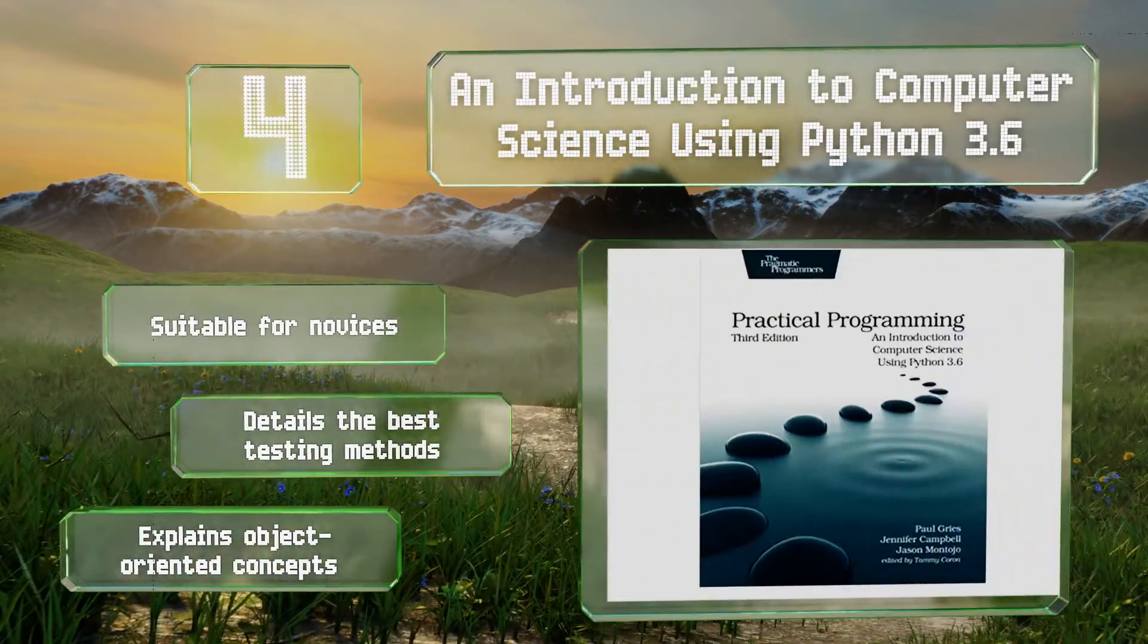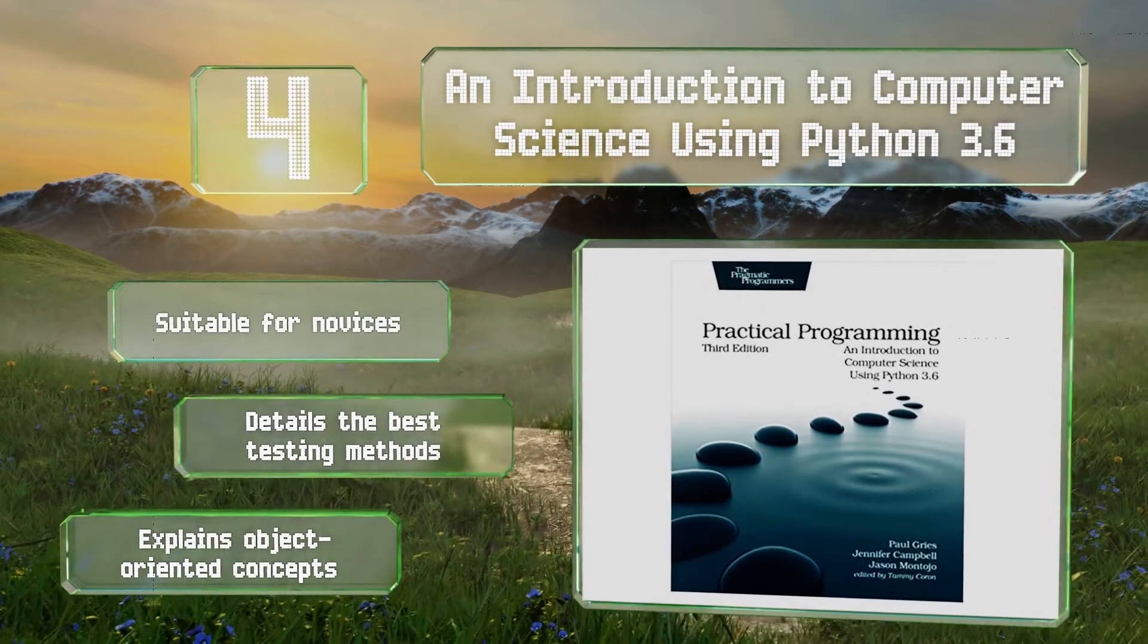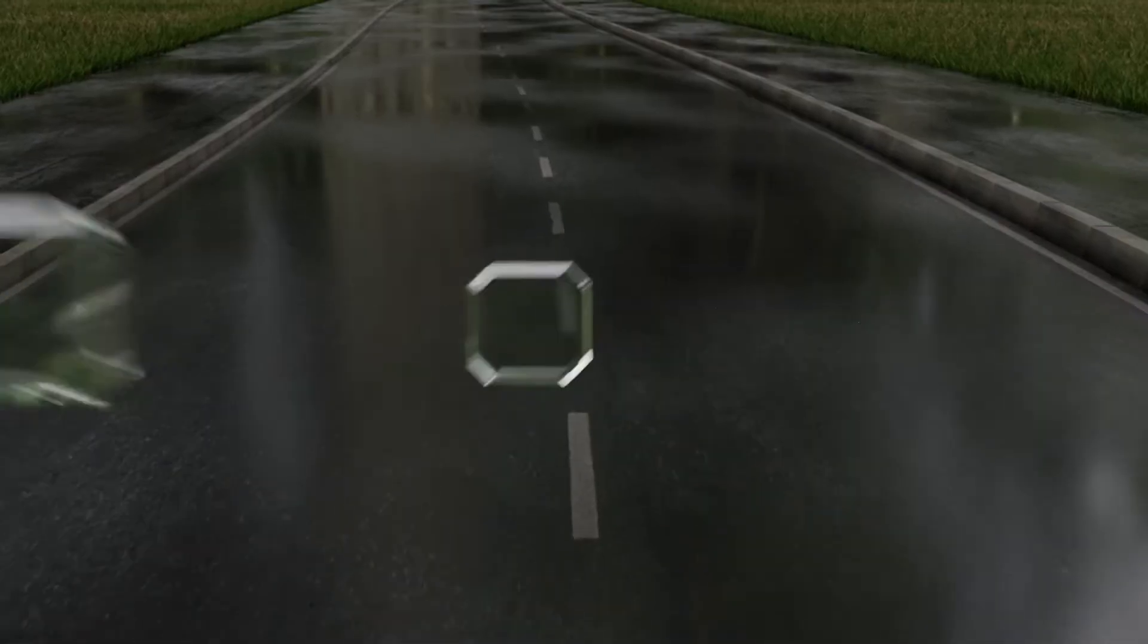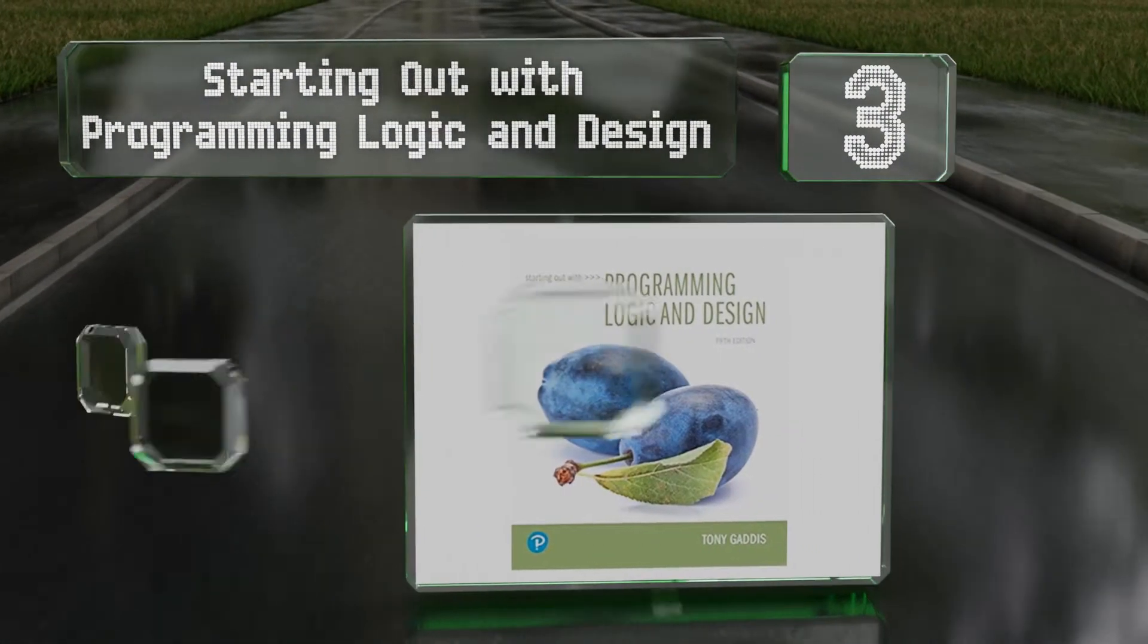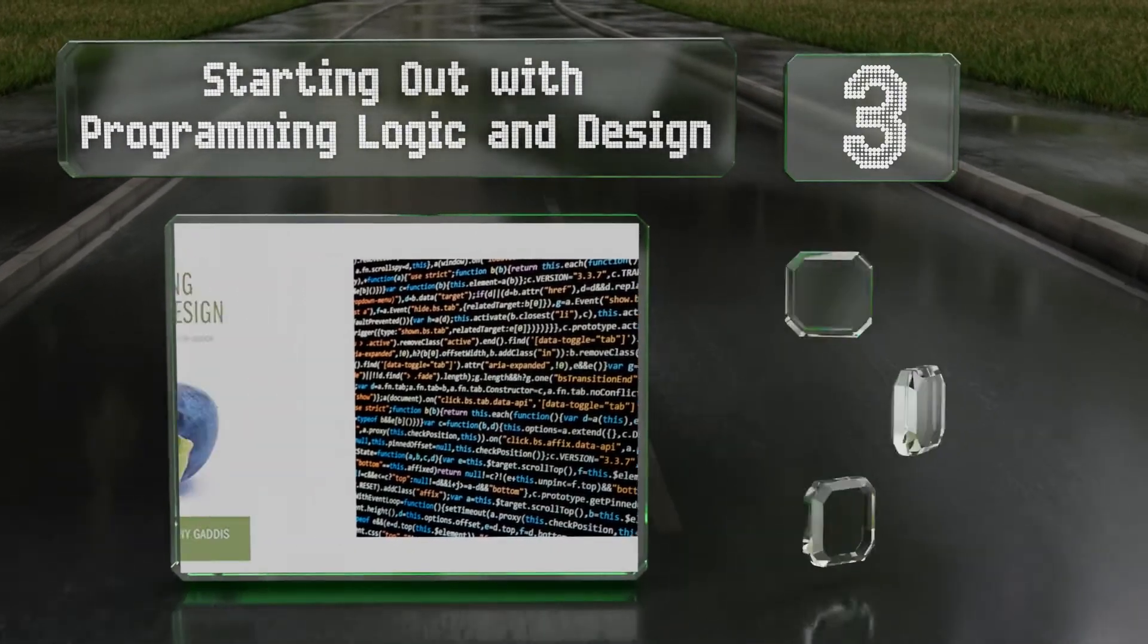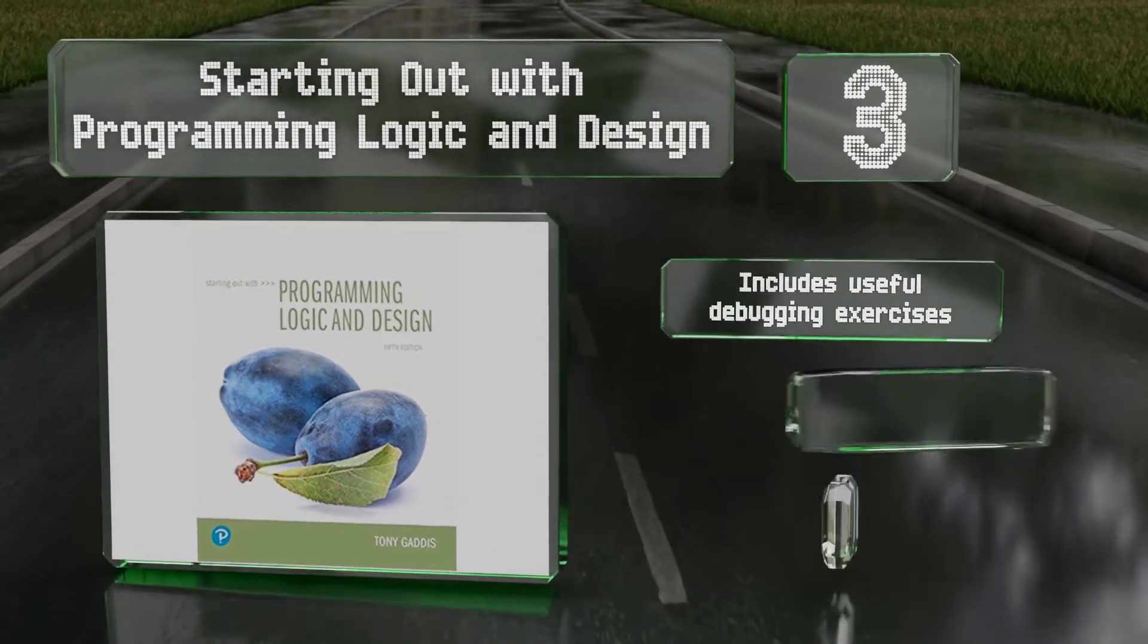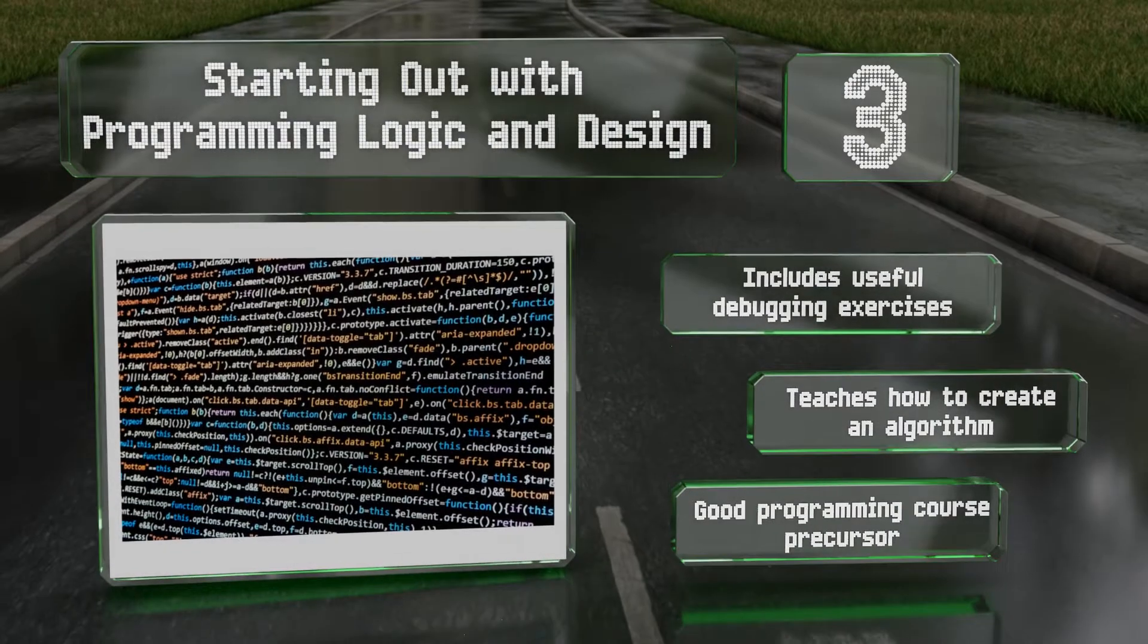Nearing the top of our list at number 3, Starting Out with Programming Logic and Design doesn't bog readers down with too much complicated syntax, but rather explains things in plain English. It contains many illustrative code snippets, flowcharts, and examples. It includes useful debugging exercises and teaches you how to create an algorithm. It's a good precursor to a programming course.